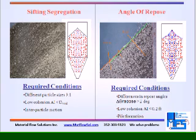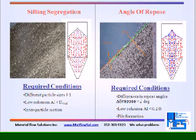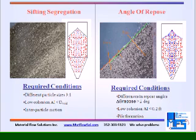Angle of repose segregation is caused by differences in repose angles greater than 2 degrees. It also requires moderately free-flowing materials. Piles are required to cause this type of segregation. It also causes a side-to-side pattern, with the lowest repose angle material concentrating at the bottom of the pile.